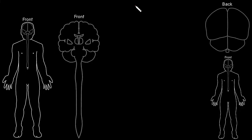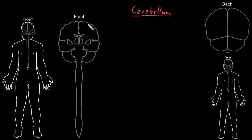In this video, I'm going to talk about the cerebellum, which sounds a lot like the cerebrum, but it's a different part of the brain. If we look at the brain from the front, we have the cerebrum on top with the right and left cerebral hemispheres. We have the brain stem underneath that, connecting to the spinal cord. And then behind the brain stem and below the cerebrum is the cerebellum.